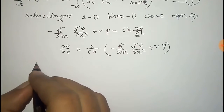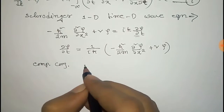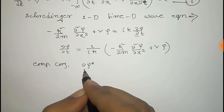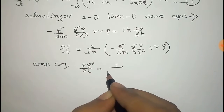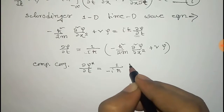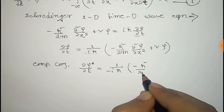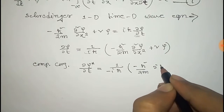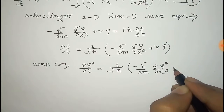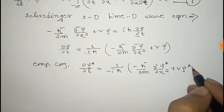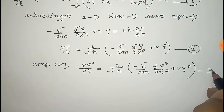We take the complex conjugate of Equation 2. This gives ∂ψ*/∂t equal to (1/−iℏ)[−(ℏ²/2m)(∂²ψ*/∂x²) + Vψ*]. We call this Equation 3.